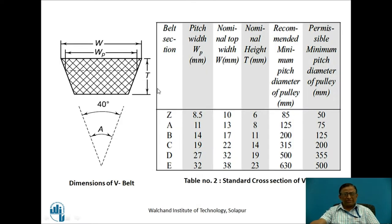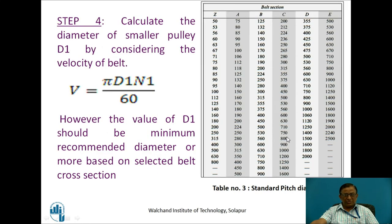The standard cross section sizes are provided for different cross sections. If I select a B cross section, it means the trapezoidal cross section of the belt will have certain depth T, pitch width, and nominal top width, as given in the table. Additionally, this belt must be operated with a minimum smaller pulley diameter of 200 mm. I should not use a diameter less than this, because it will add additional bending stresses in the belt that may be unaccountable in certain cases.